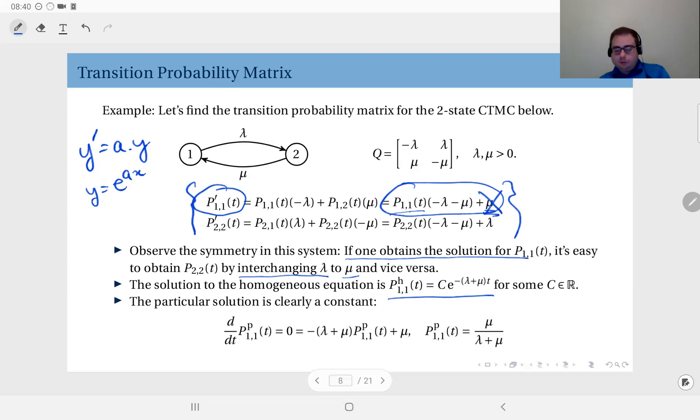And the particular solution, well, now this is in play, mu. You see, the particular solution is a constant. Why? Because if it's a constant, the derivative dies out. It becomes zero. And you see, you can find a constant for this to satisfy this equaling zero. So you set that down, you solve for it, you obtain the particular solution as mu divided by lambda plus mu.